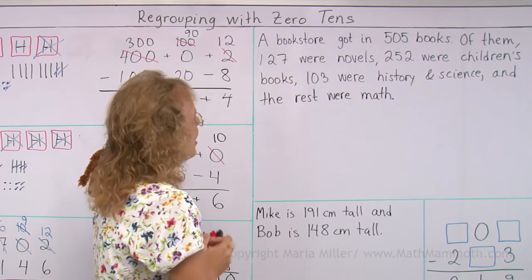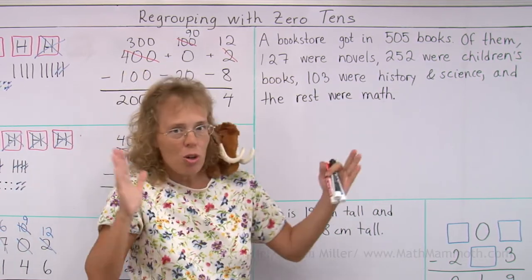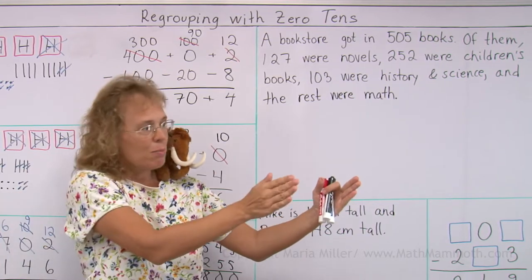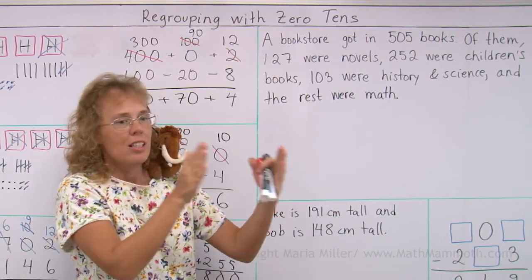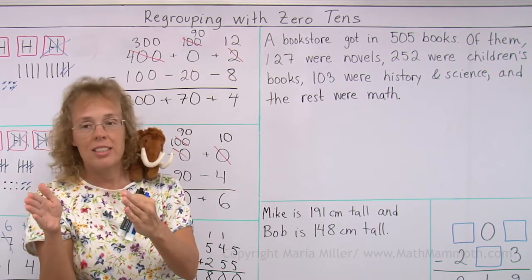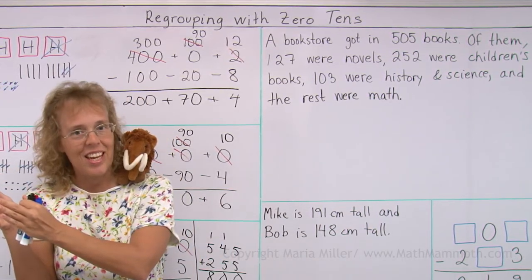So all kinds. Think of it this way. There's a total of 505 books, and then this much of them were novels, this many of them were children's books, and this many of them were history and science, and then the rest were math.